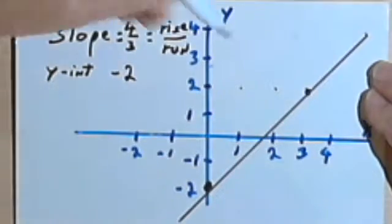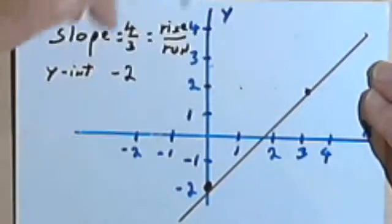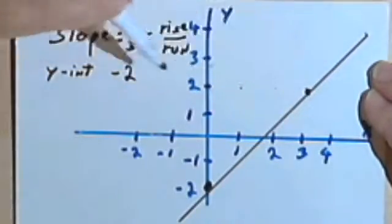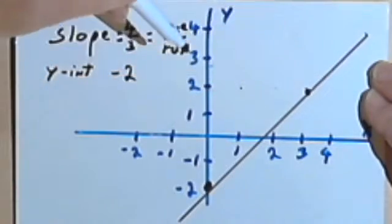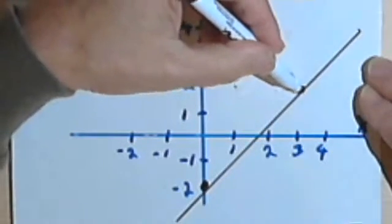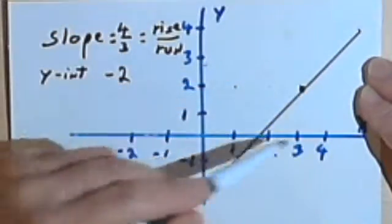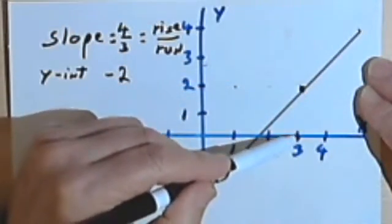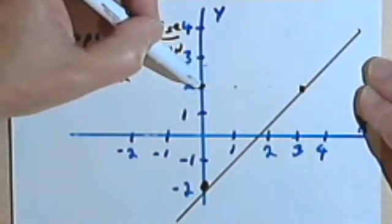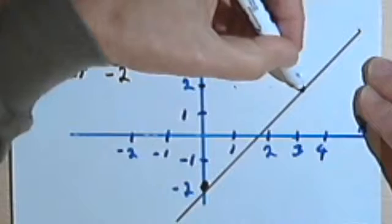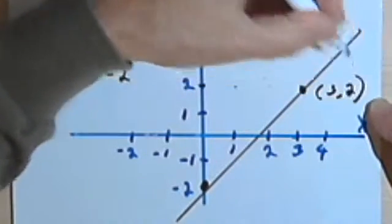If you're doing this for credit or for homework or something like that, you might want to label the points that you put in. So we might want to label this point here, especially if you're not working on graph paper, just so you can show that you got this point right. So this point here would be, let's see, we're over at the 3, and we've got a 2 here, so this point here would be 3, 2.